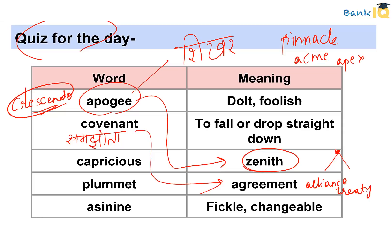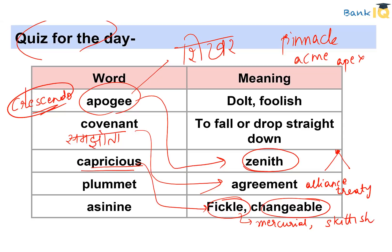The word 'Capricious' refers to someone or something that changes quickly and unpredictably. It means fickle. Important synonyms include 'mercurial' and 'skittish.' If a person or thing is unpredictable, we use the word capricious.